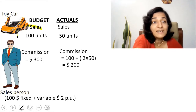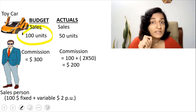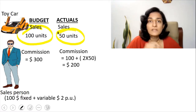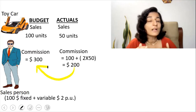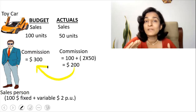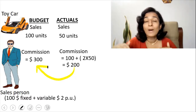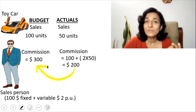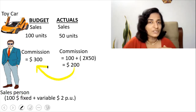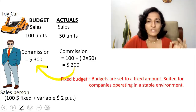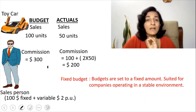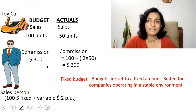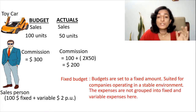In this case, the activity level that has been budgeted is for 100 units, but the actual results are only for 50 units. Such budgets where the budgets are fixed are suited only for companies operating in a stable environment — that is, they do not have violent fluctuations in sales. These budgets are known as the fixed budget. A fixed budget is set to a fixed amount, suited for companies operating in a stable environment, and expenses are not grouped into fixed and variable here.